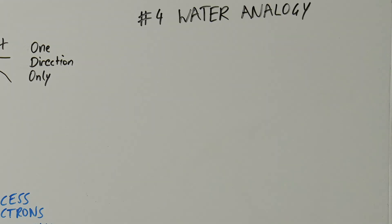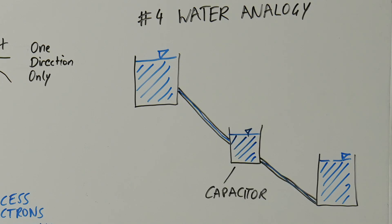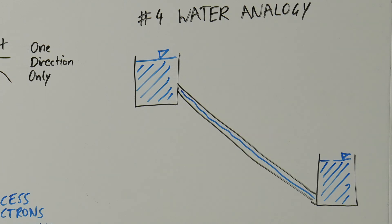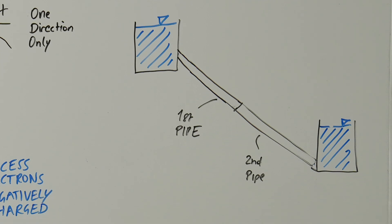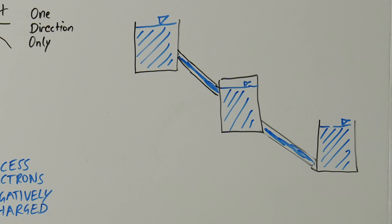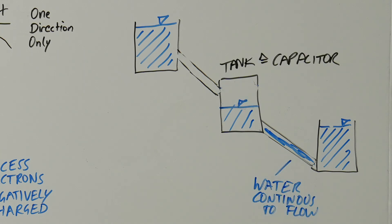In the water analogy, the capacitor is a water tank between two pipes. If we were to interrupt the flow of the first pipe without a water tank, the second pipe would immediately be without water. However, if we placed a water tank between the two pipes, the water would continue to flow even after we turned off the first pipe, as long as there is water in the tank.